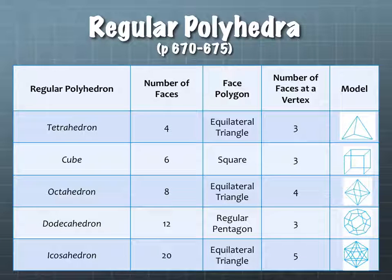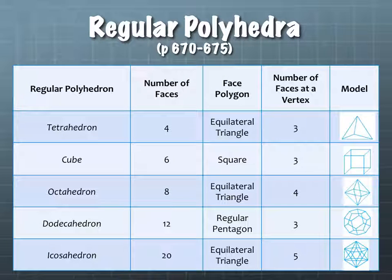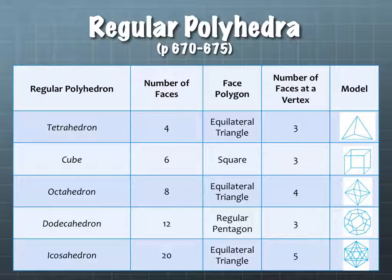The next one is called an octahedron. The 'octa' comes from the fact that there are eight faces, but the faces themselves are not octagons — they are equilateral triangles. You have four equilateral triangles on the top and four equilateral triangles on the bottom. If you match them up, you end up with the octahedron, and at every vertex there are actually four triangles that meet there, instead of just three like the tetrahedron.